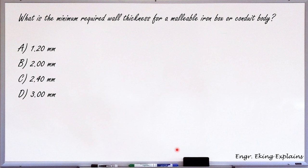what is the minimum required vault thickness for malleable iron box or conduit? So if your conduit is malleable iron or aluminum, so what is the thickness of your metal sheet for the construction of such boxes?